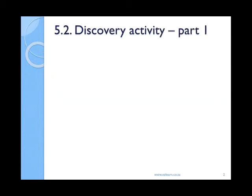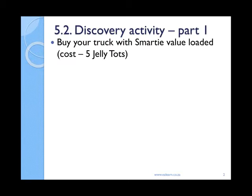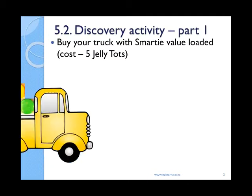Discovery activity, part one. For this activity you will need a little dinky toy truck, a matchbox, a small basket or dish, and importantly a box of smarties and a packet of jelly tots, a money bag, and a pencil. Firstly, you need to buy your truck with the smarty value loaded. Imagine that the smarty value is five smarties — put these smarties on the truck, and you will need to pay five jelly tots in return for this truck.